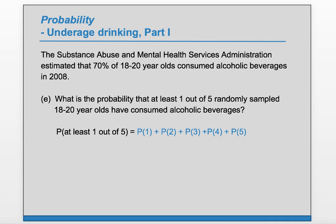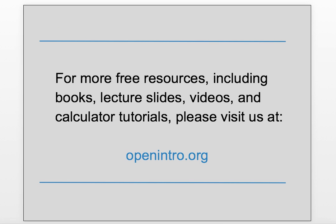The opposite of at least 1 is none. So instead of adding all those probabilities, we do 1 minus the probability of none — 1 minus the probability of 0. That's 1 minus 0.3 raised to the 5, because there are 5 being sampled. We evaluate this and get 0.9976. That's it for this video. For more free resources, check us out at openintro.org.